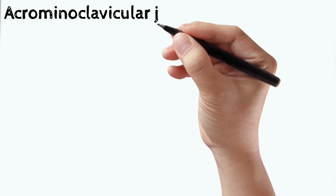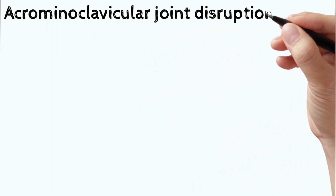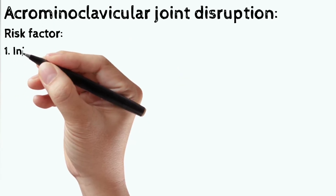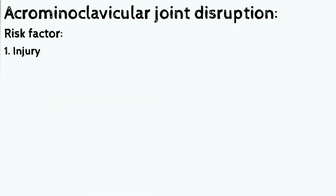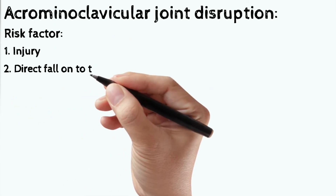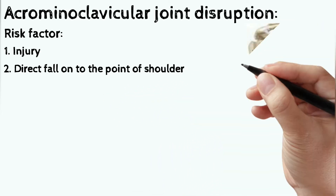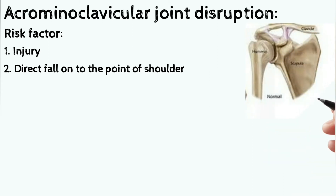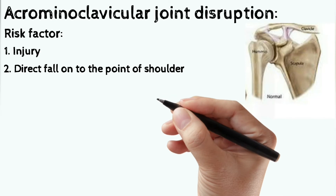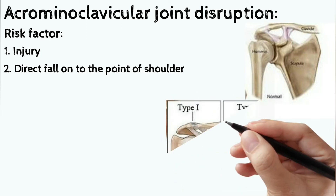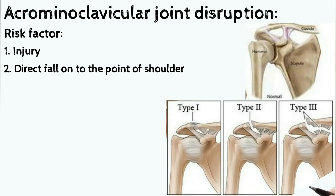Acromioclavicular joint disruption or dislocation. The risk factors are injury and direct fall on the point of the shoulder joint. Here we can see a normal shoulder and normal acromioclavicular joint. Here we can see type 1, type 2, and type 3 injuries of the acromioclavicular joint. In type 3 there is much more disruption of the joint.